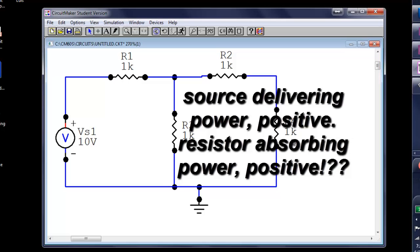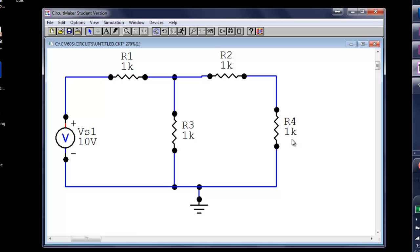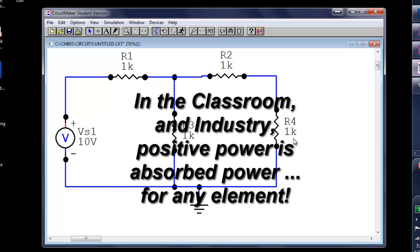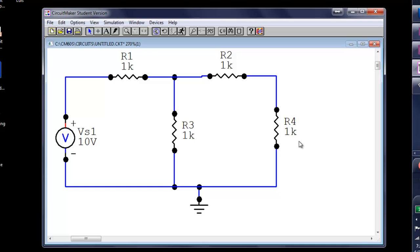And it's not the way we do things normally in industry or in the classroom. In the classroom and in industry, an absorbed power is reported as positive, and a delivered power is reported as negative, regardless of what element we are considering.